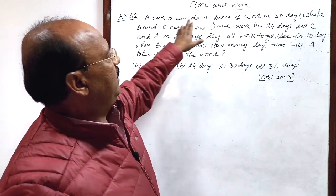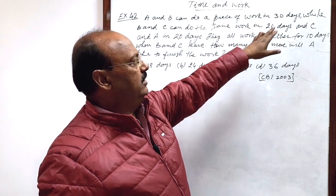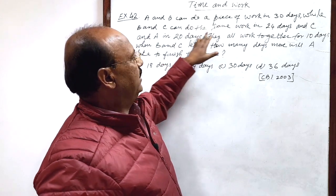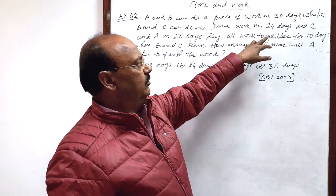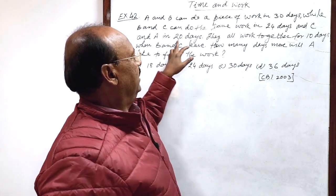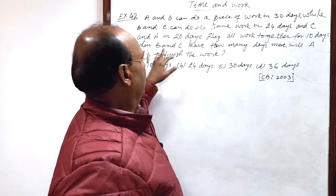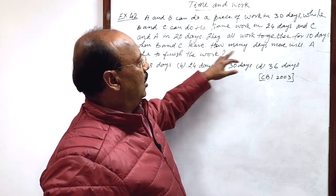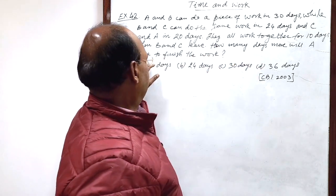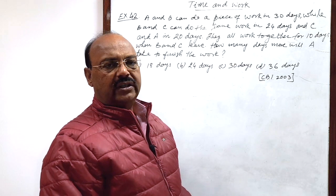Question is: A and B can do a piece of work in 30 days, while B and C can do the same work in 24 days, and C and A in 20 days. They all work together for 10 days when B and C leave. How many days more will it take to finish the work alone?